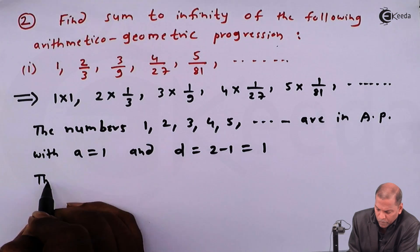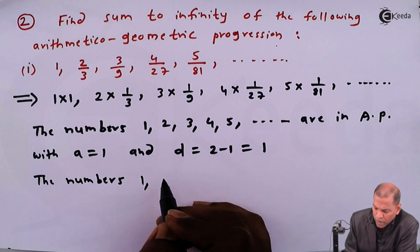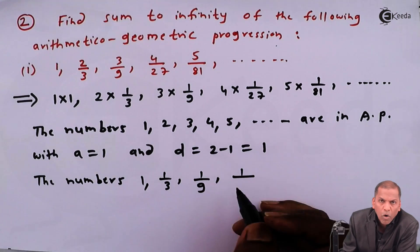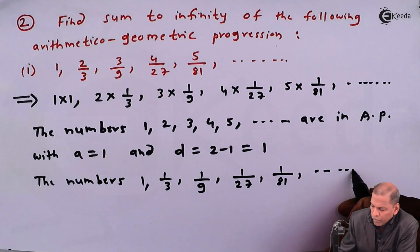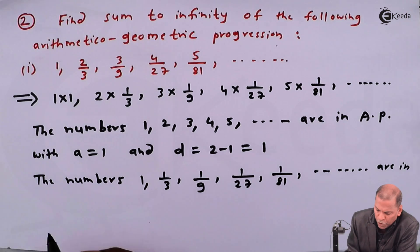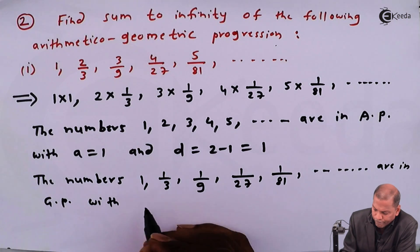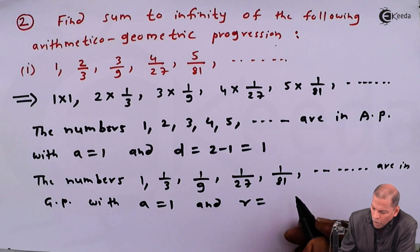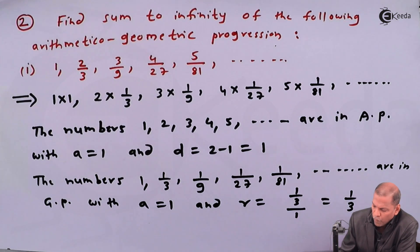Now we consider the second terms: the numbers 1, 1/3, 1/9, 1/27, 1/81, and so on. These are in GP with first term a = 1 and common ratio r = (1/3) ÷ 1 = 1/3.